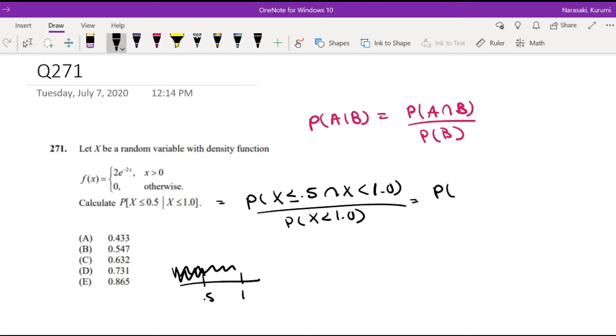So the numerator can just be simplified to x is less than 0.5, less than or equal to 0.5 divided by probability that x is less than 1.0.